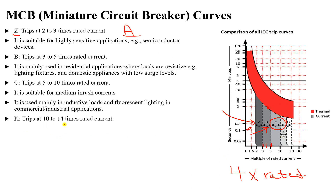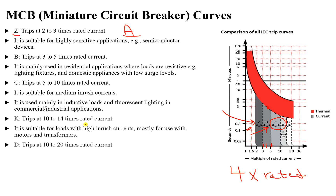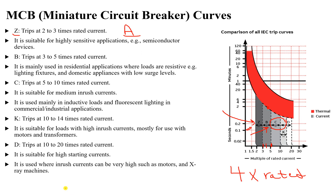Type K operates between 10 to 14 times the rated current, and type D operates between 10 to 20 times the rated current. Both K and D are used for loads with very high inrush or starting currents, such as large transformers, large generators, large motors, and X-ray machines. To prevent the circuit breaker from tripping at startup of these loads, we use type D or K trip curves.